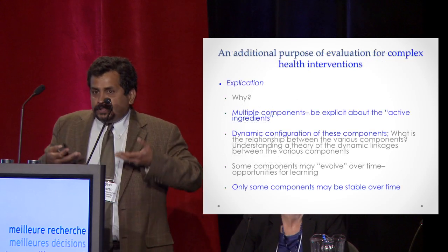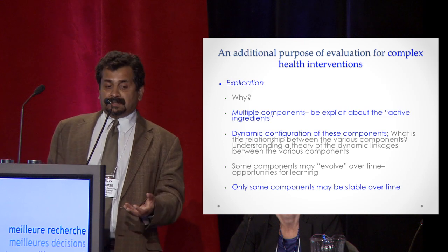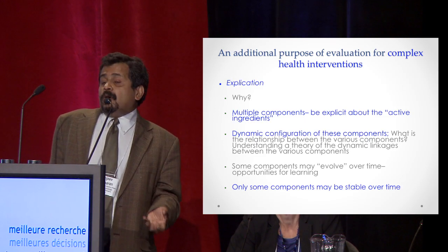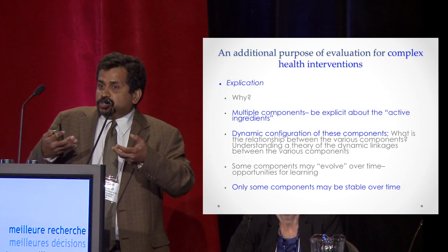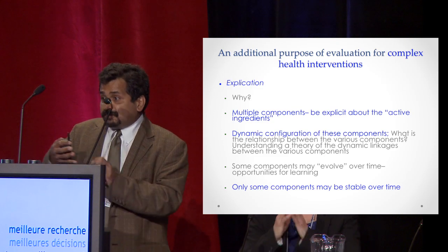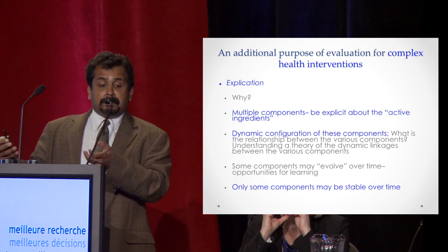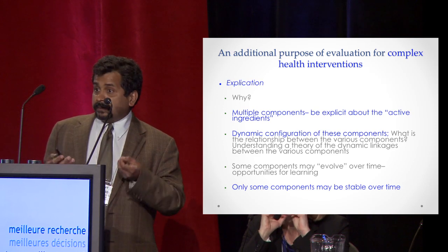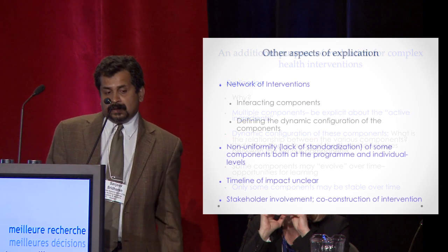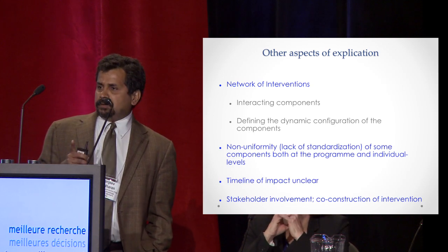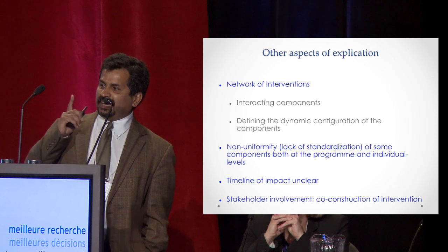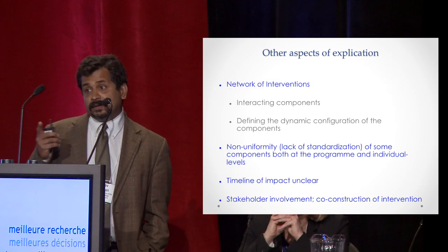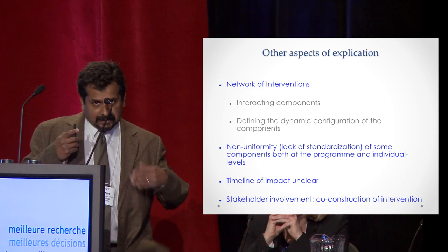Once you start thinking in more complex terms, we have multiple components and multiple opportunities. I'm calling this explication — I've worked on many interventions where people say they don't know what the active ingredient of change itself is. If interventions change over time and there are multiple such interventions, the question of what the different dynamic configurations are, and the relationship between different components, becomes important. In my own practice, I like asking which components are stable and which change over time, because that impacts the kinds of designs you use. For complex interventions, you're often looking at networks of different interventions, not just one. As a field, we're still grappling with what this means in terms of methodology.